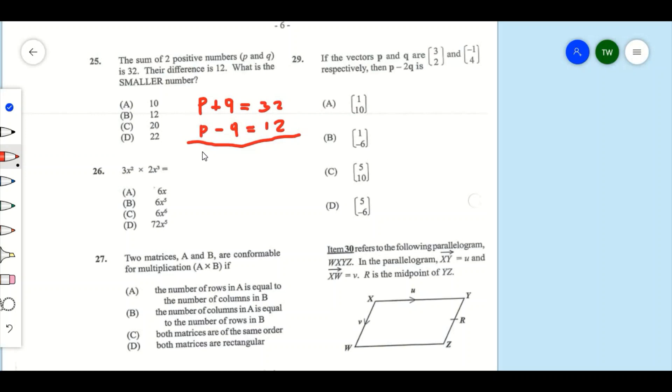So P plus P, that's going to give us 2P. And Q plus negative Q, that's going to give us 0. And 32 plus 12, that is going to equal to 44. We're going to divide both sides by 2 to find what P is. So clearly here, notice that 2 is going to cancel out 2. So P is going to equal to 44 divided by 2. That's going to give us 22.